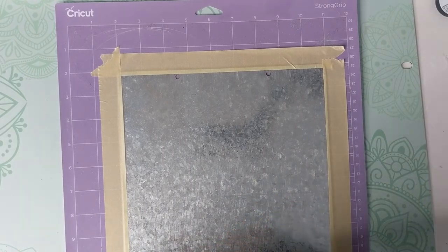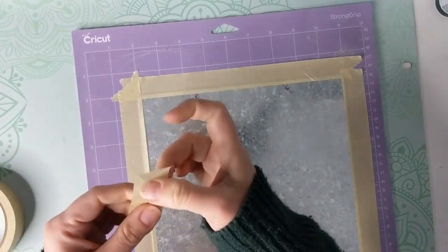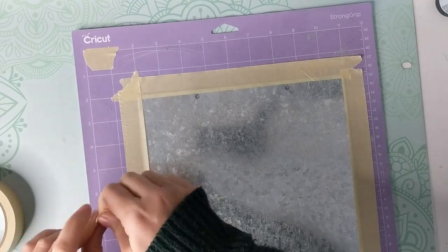Now we just need to add some masking tape. If you want to protect your mat from the little engraving circle the Cricut is going to make right here in the corner, you can add a couple of layers of masking tape. But honestly, it's totally optional.